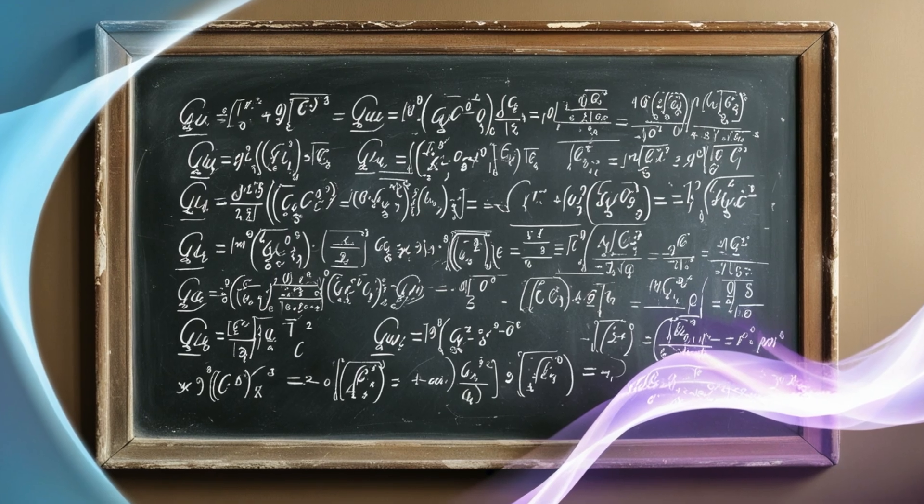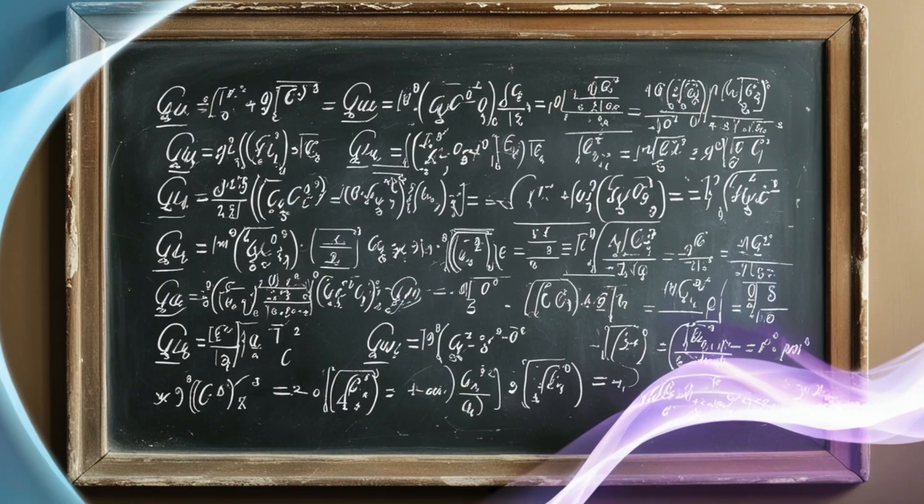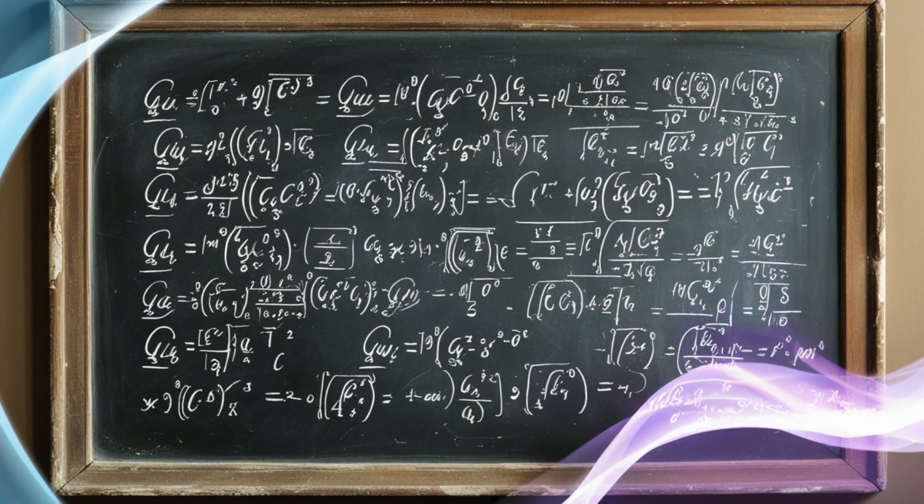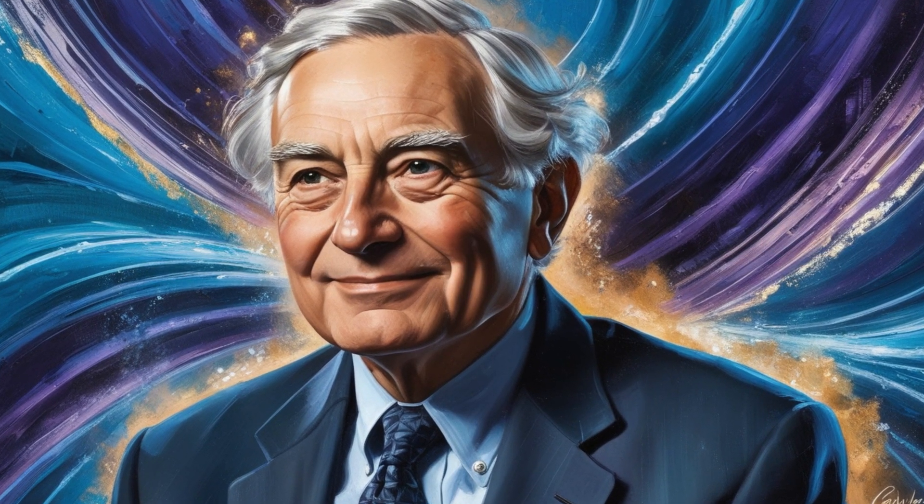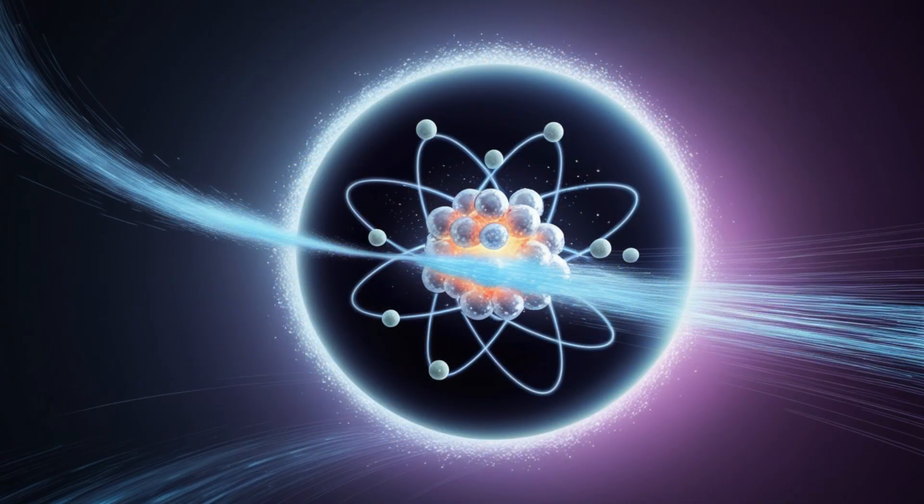The idea of quantum tunneling emerged in the early 20th century, when physicists tried to explain phenomena that classical physics simply couldn't. In the 1920s, George Gamow, a brilliant Russian physicist, used the tunneling idea to solve a nuclear mystery: radioactive alpha decay.